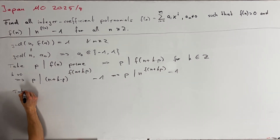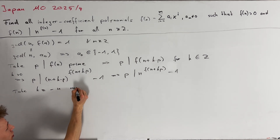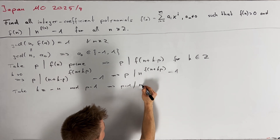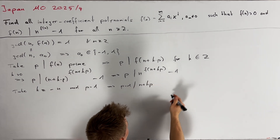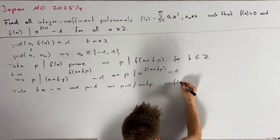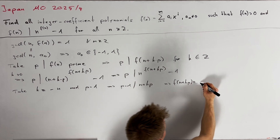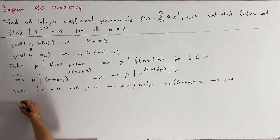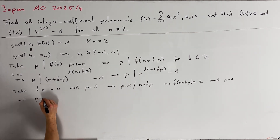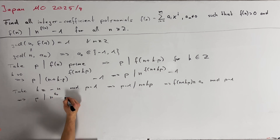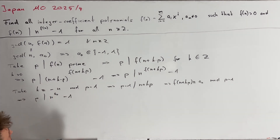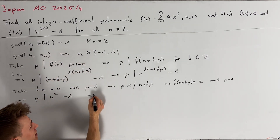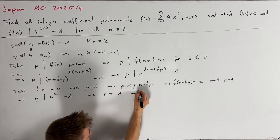We take k congruent to minus n modulo p minus 1, so that p minus 1 divides n + kp. This directly implies that f(n + kp) is congruent to a₀ modulo p minus 1. By Fermat's little theorem, we conclude that p divides n to the power of a₀ minus 1. Using our earlier observation that a₀ is either 1 or minus 1, in both cases this implies that n is congruent to 1 modulo p.